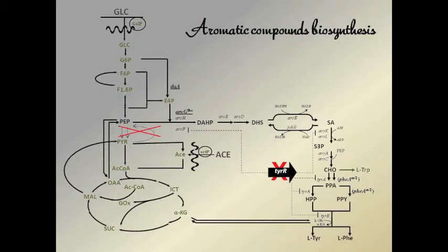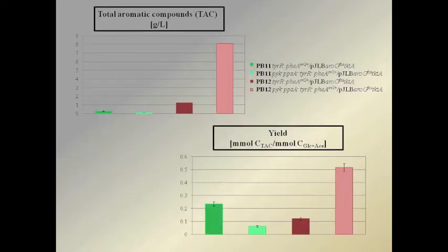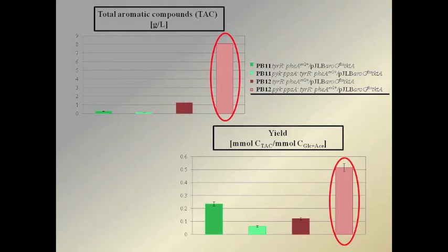In this manuscript, we also demonstrated that by performing such mutations, phosphoenolpyruvate derived from glucose catabolism can be directed toward the aromatic compounds' biosynthetic pathway. The engineered strain derived from PB12, PYK-, PFK-, PPS-, enhanced the final titer and yield of aromatic compounds when co-utilizing glucose and acetate.